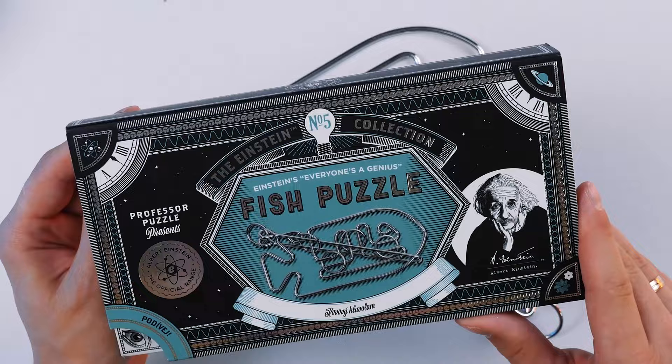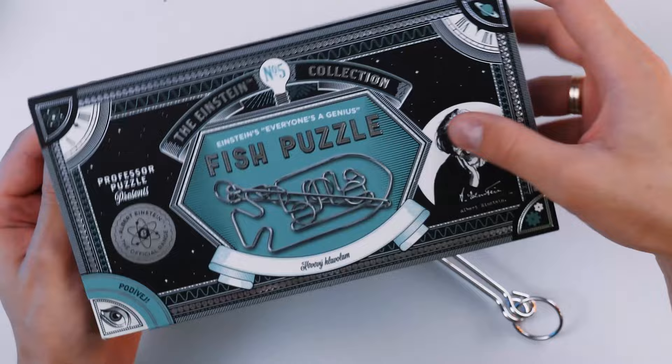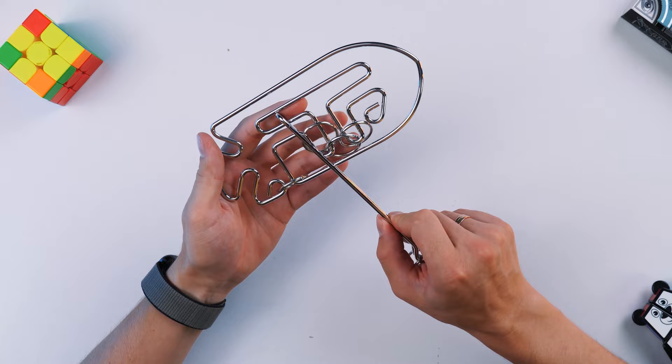We need to disconnect this basic part from the fish. And let's think about how we can do that. We can assume that we have already started to solve this puzzle. We will enjoy its appearance and the sound of it as we solve the puzzle.